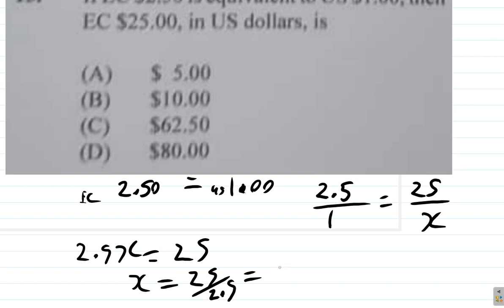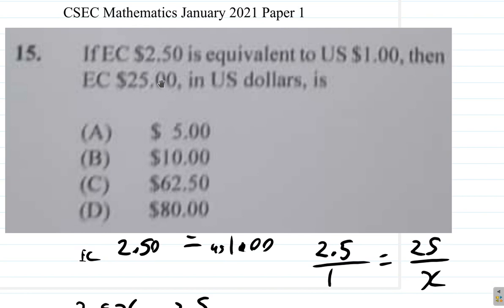The thing is, you could have seen it before, that if you have 2.5 and you multiply by 10 to get 25, when you have 1, you multiply by 10 to get 10.